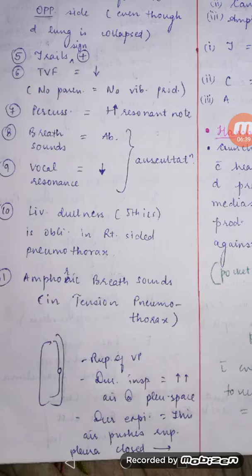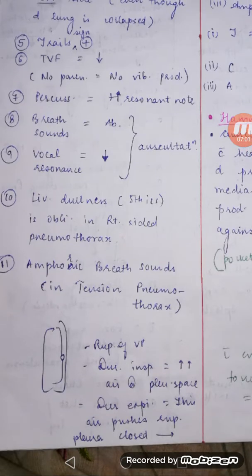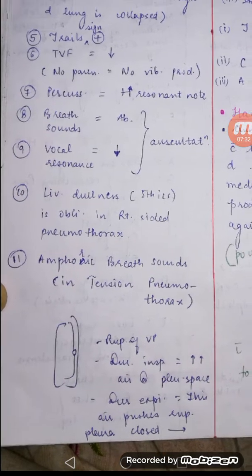Trelat's sign will also be positive: if pneumothorax is on the left and trachea deviates right, the sternocleidomastoid muscle on the right side will be more prominent. For TVF — tactile vocal fremitus — it will be decreased, because the best medium for sound energy is solid, then liquid, then gas. Since pneumothorax is filled with air (gas), TVF decreases. Vocal resonance will also decrease, and breath sounds will be almost absent.